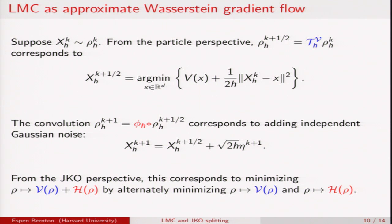So together, these two steps make up one iteration of the proximal ULA scheme. From the JKO perspective, this corresponds to minimizing the sum of V and H by alternately minimizing V and H, going back and forth between minimizing the two of them.